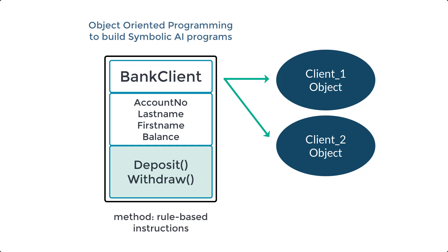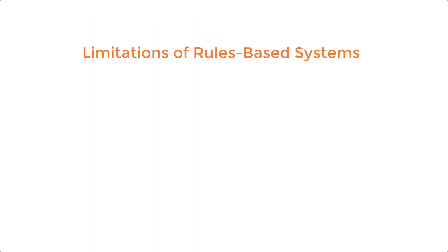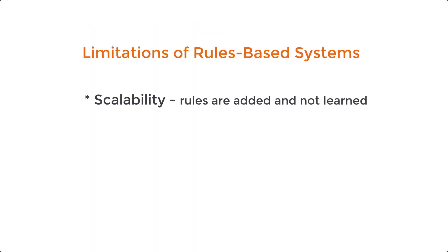Although the main advantage of rule-based systems is that they are relatively easy to understand, transparent, and can be built to represent domain expert judgment, rule-based systems have some critical limitations. First is scalability — rules are added and are not learned by the system. Therefore, simple rules can become very complex, leading to potential overlapping of rules, making them harder to understand and maintain.